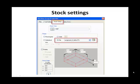Check the Display box and click OK to see the stock overlaying your part geometry. Re-open the Stock tab and uncheck Display to make the stock invisible.